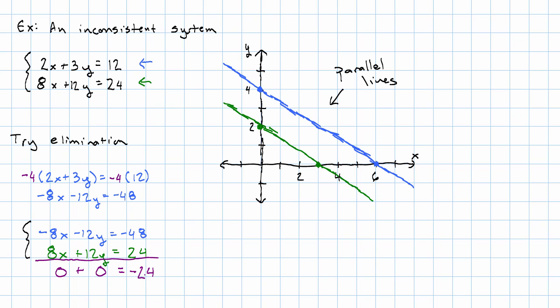This cannot possibly be true. Zero is not equal to negative 24, no matter what. And that's what's going to happen in general. We'll get a false equation in the form number equals number. There will be no variables and the numbers will actually be different.